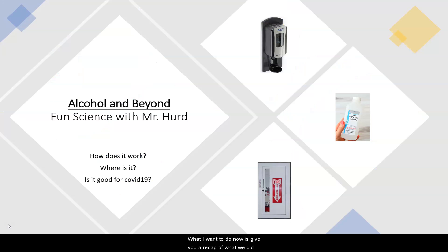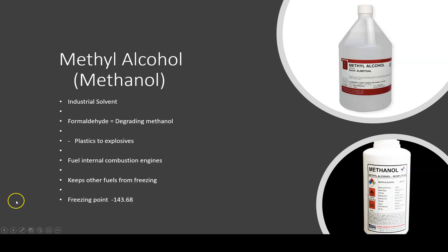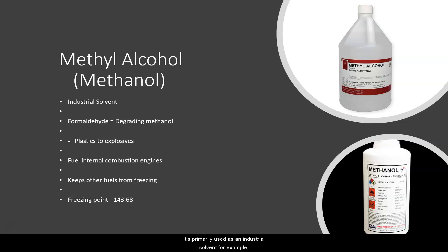What I want to do now is give you a quick recap of what we did last week in our Fun Science class, Alcohol and Beyond. There were three different types of alcohol that were introduced. The first was methyl alcohol, or methanol. It's primarily used as an industrial solvent.